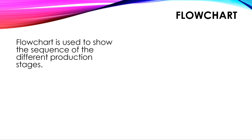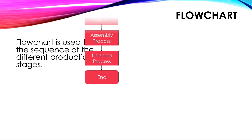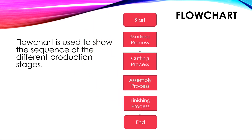Flowchart is used to show the sequence of the different production stages. We start with measuring and marking process, then cutting process, then assembly process, followed by finishing process, and finally it completes with end.